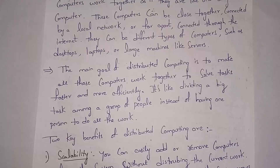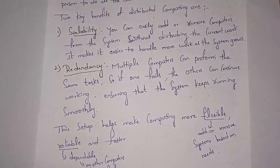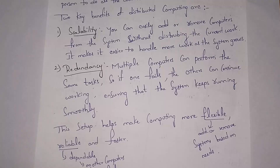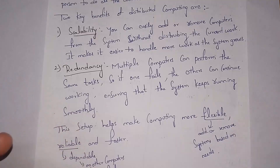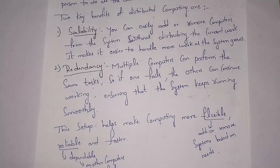Parallel computing and distributed computing are different. In parallel computing, inside a CPU we use multiple processors, whereas in distributed computing we use multiple computers connected to each other by internet or cable. These computers can be of any type — laptops, desktops, servers, etc. Distributed computing is like dividing big tasks among multiple people instead of giving all work to a single person. One advantage is scalability — you can easily add or remove computers based on workload without disturbing current work.